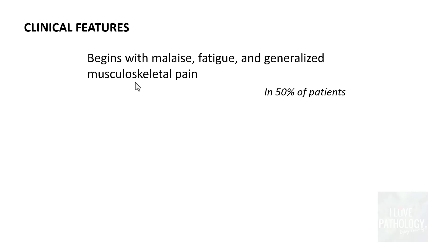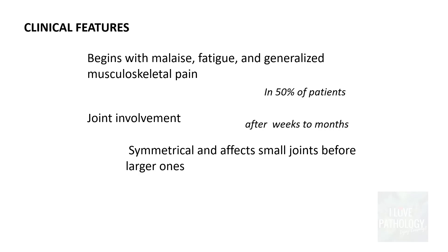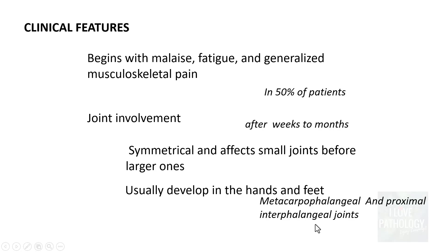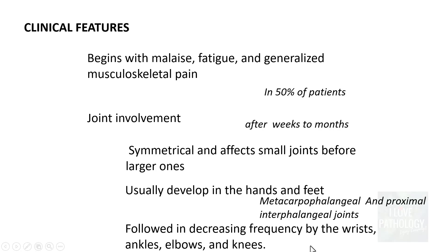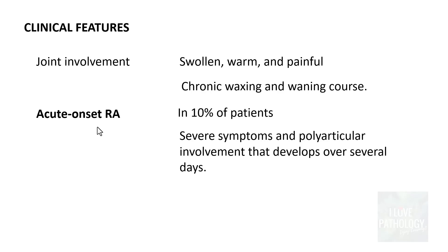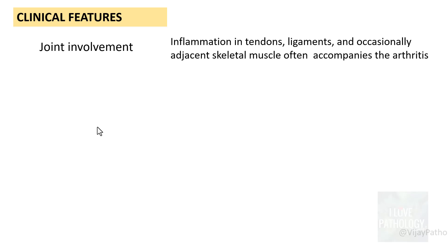Clinically, in 50% of patients the disease manifests as malaise, fatigue and generalized musculoskeletal pain. After a few weeks or months, there will be joint involvement, which is often symmetrical. It affects small joints before larger ones — usually developing in the hands and feet, most often the metacarpophalangeal and proximal interphalangeal joints, followed in decreasing frequency by the wrists, ankles, elbows and finally the knee. Joints are swollen, warm and painful with a chronic waxing and waning course. Acute onset RA occurs in around 10% of patients with severe polyarticular involvement over just a few days. Joint involvement can also lead to inflammation in tendons, ligaments and occasionally adjacent skeletal muscle.